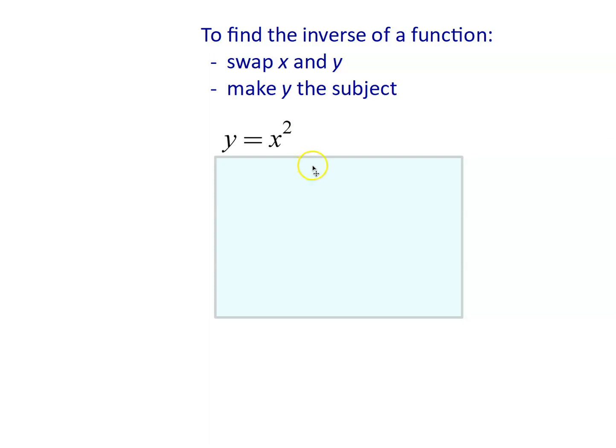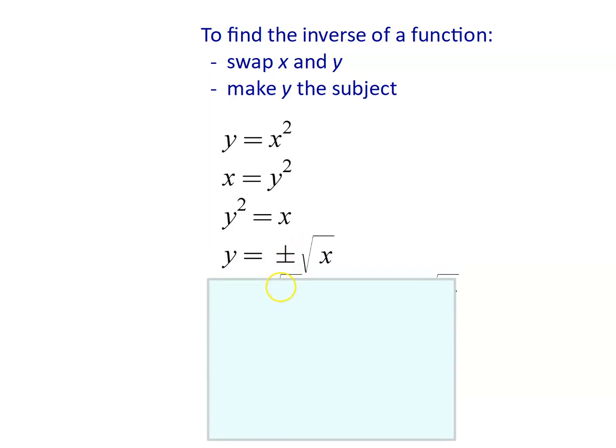So first we just swap x and y, and now we have to make y the new subject. So y squared equals x. Just swap the two to put the y on the left and take the square root.